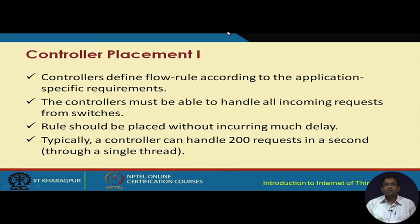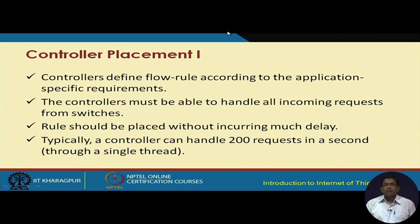Placement of rules, if not already existing in the flow table of a switch, typically takes about three to five milliseconds. This has to be minimized because otherwise there will be a huge control overhead. Since the control logic is separated out to the controller, we do not want too much control-link delay. There is definitely a trade-off — we cannot avoid this delay, but we have to minimize it. Typically, a controller can handle roughly about two hundred requests per second.